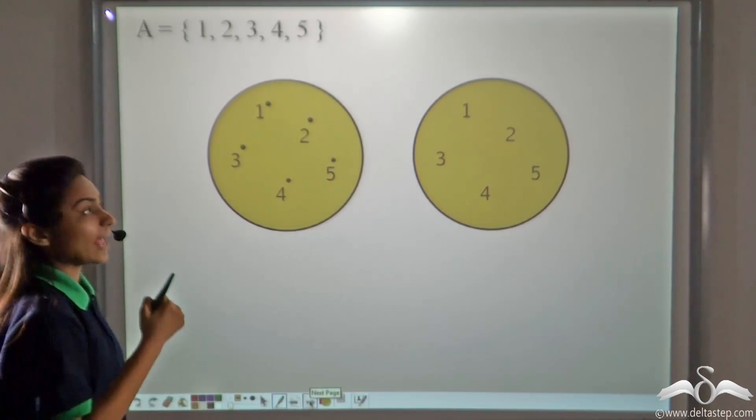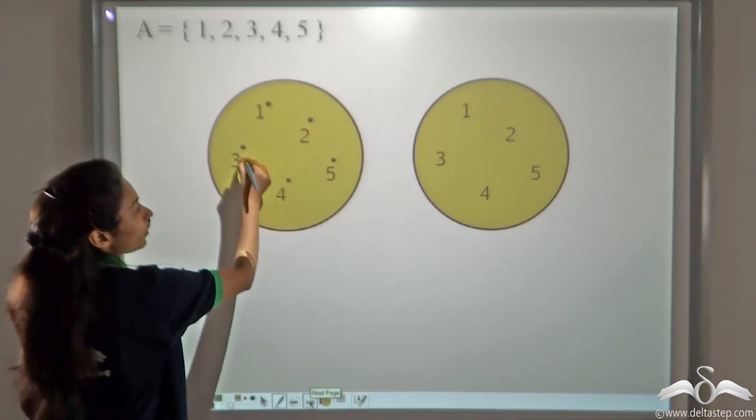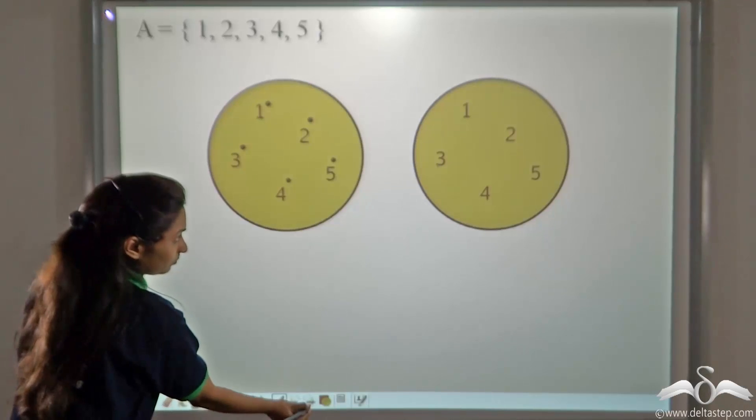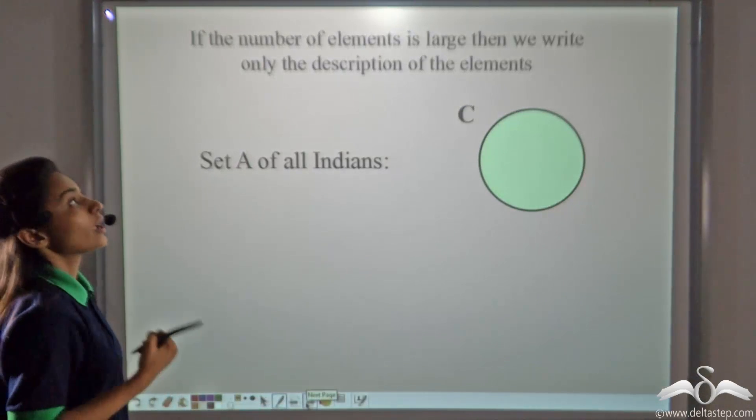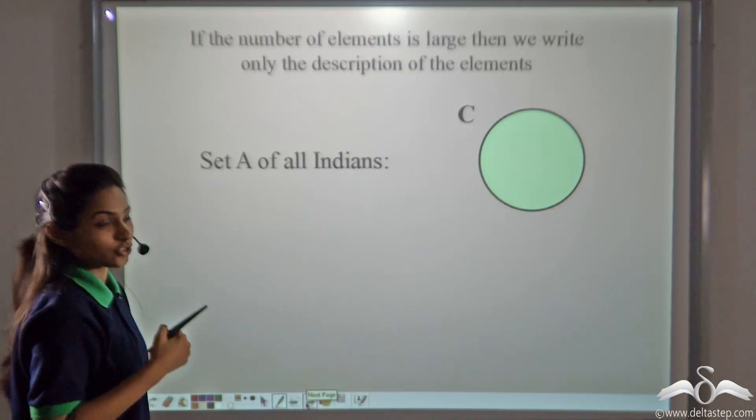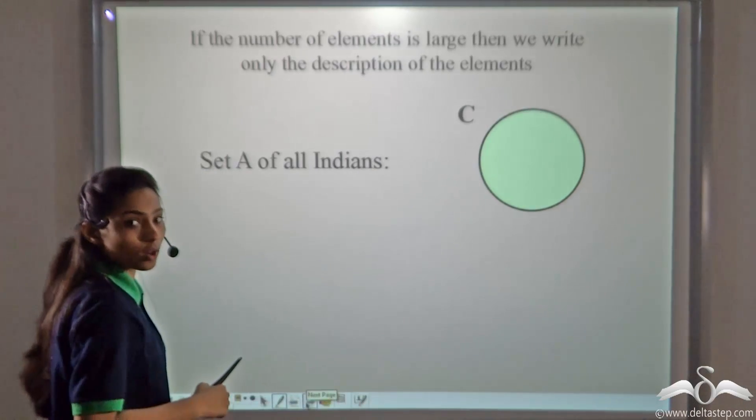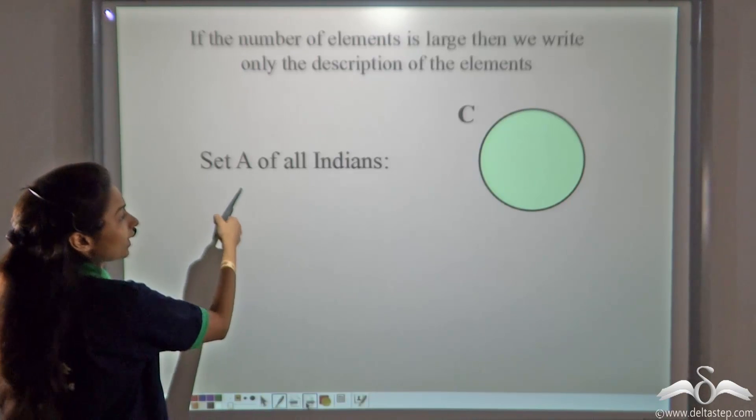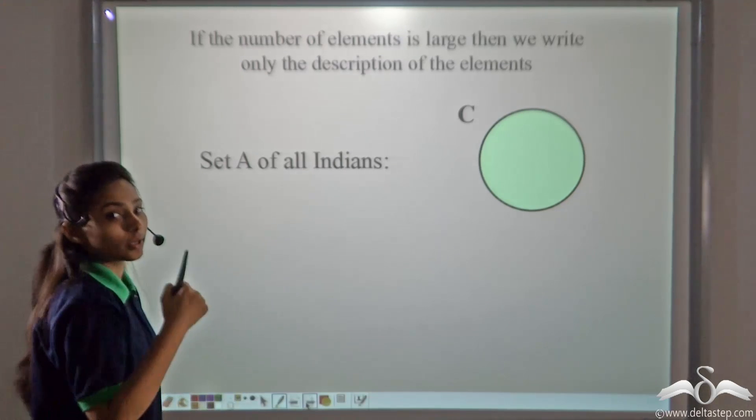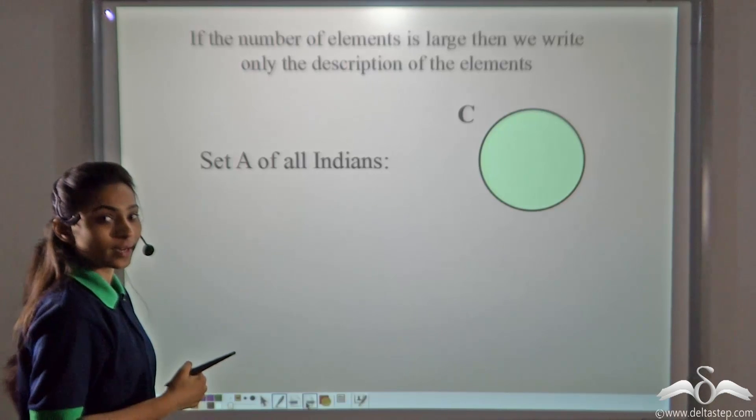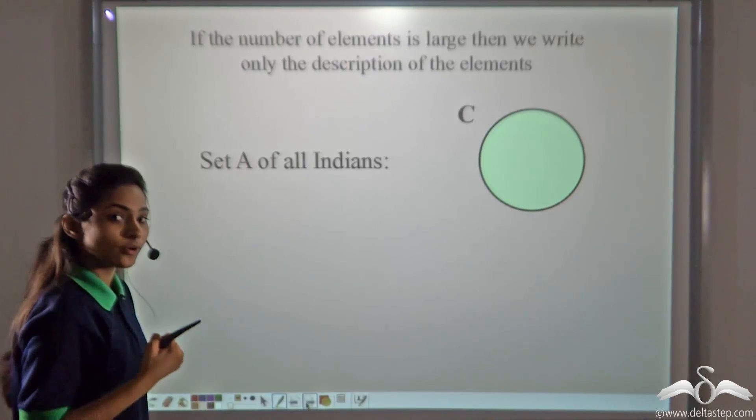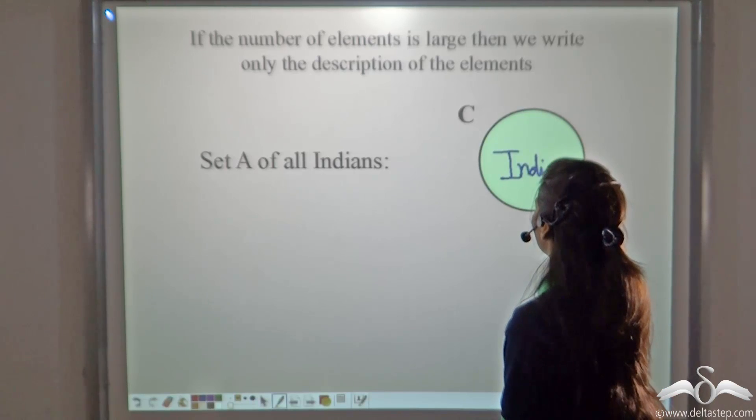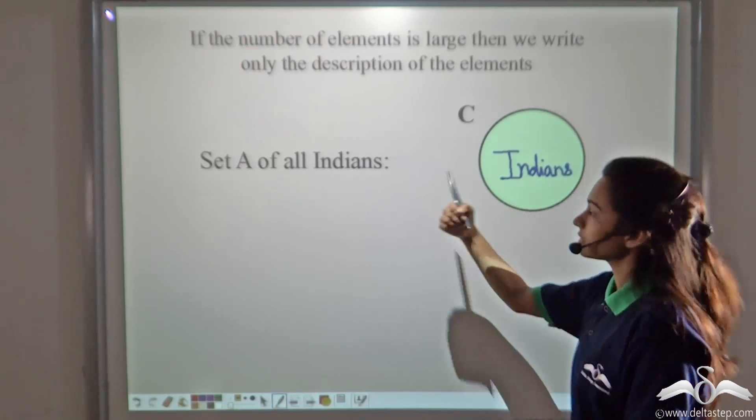We can write elements inside a Venn diagram with points or simply without points. Now if the number of elements is very large, then how will you fit all the elements inside a small Venn diagram? You can just write, for example, say a set A of all Indians. Now can you write the names of all Indians inside this Venn diagram? No. So how will you write it? Just write the set Indians inside it and it will denote this set.